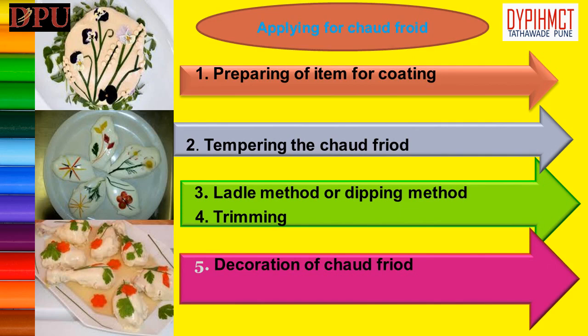Coating by ladle method or dipping method. There are two ways to apply chaud-froid sauce. In both cases, more than one coat is advisable to get an even appearance and smooth finish. Refrigeration between both coatings must be done for a better result. 1. Ladle method: Sauce is poured by ladle onto the product — for example, large joints or pieces of meat. 2. Dipping method: The item to be coated is dipped into the sauce — for example, smaller items of meat or quail.